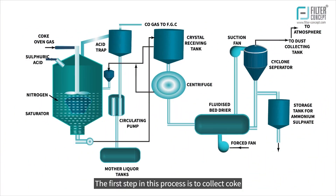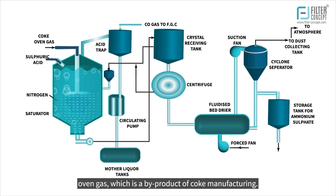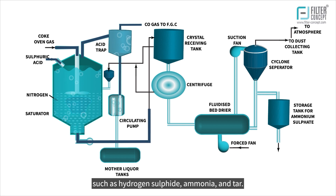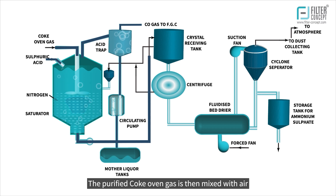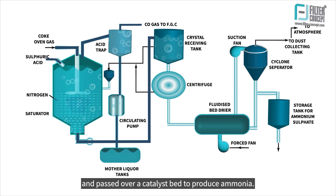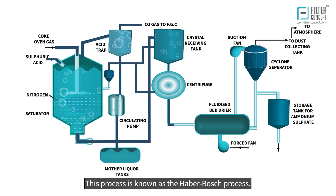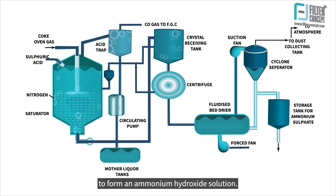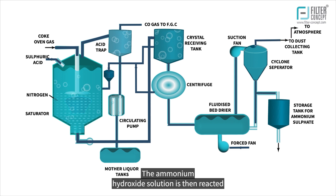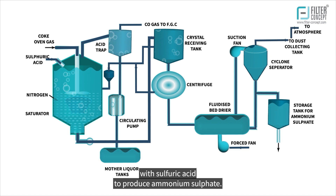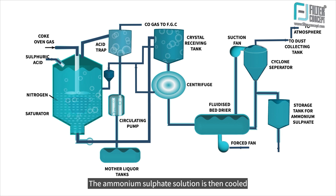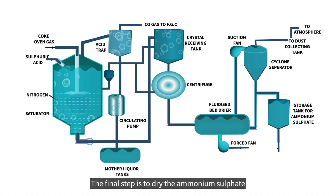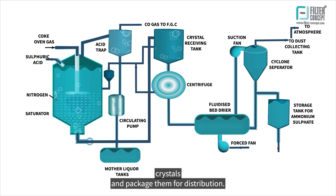The first step is to collect coke oven gas, which is a by-product of coke manufacturing. Coke oven gas is then purified to remove impurities such as hydrogen sulfate, ammonia, and tar. The purified coke oven gas is then mixed with air and passed over a catalyst bed to produce ammonia — a process known as the Haber-Bosch process. The ammonia gas is then absorbed in water to form an ammonium hydroxide solution, which is reacted with sulfuric acid to produce ammonium sulfate. The solution is cooled and crystallized to obtain solid ammonium sulfate, which is then dried and packaged for distribution.